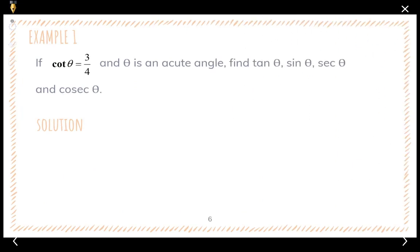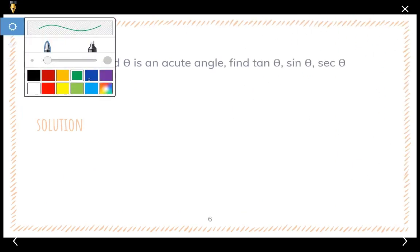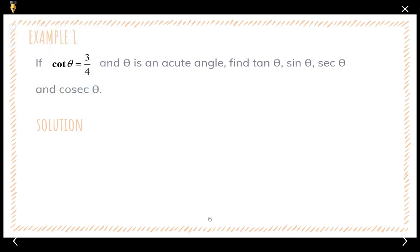Let's look at example one. The question is: if cotangent theta equals three over four, and theta is an acute angle, find tangent theta, sine theta, secant theta, and cosecant theta.